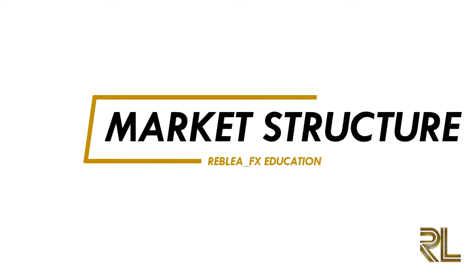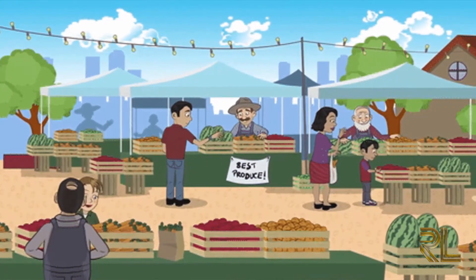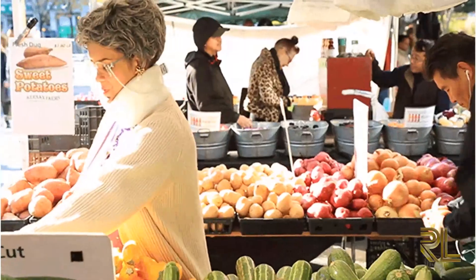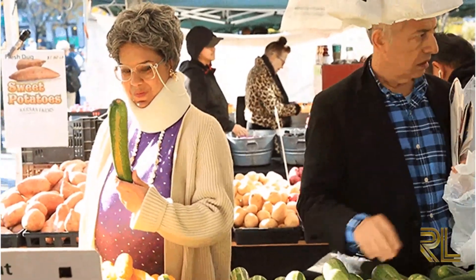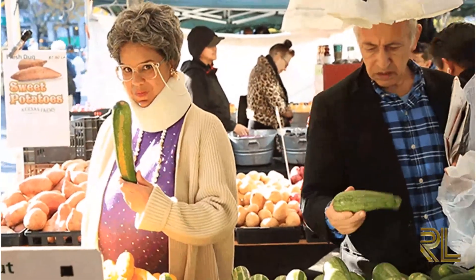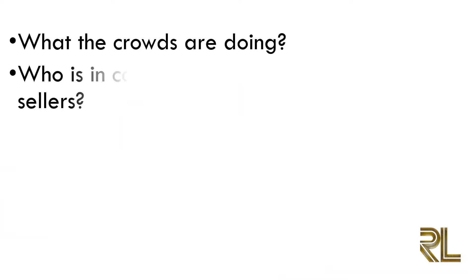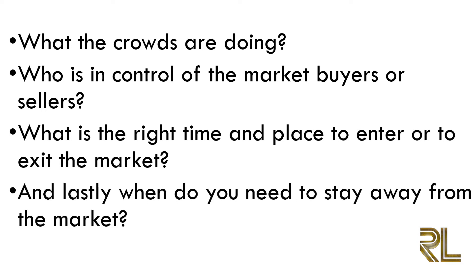In this video we are going to be discussing market structure. It's one of the most important skills you need as a trader — the ability to read the market structure. It is a critical skill that will allow you to use the right price action method in the right market condition. The market structure is the study of market behavior, and if you can master this skill, when you open your chart you will be able to answer: one, what the crowds are doing; two, who's in control — buyers or sellers; three, what is the right time and place to enter or exit the market; and four, when do you need to stay away.